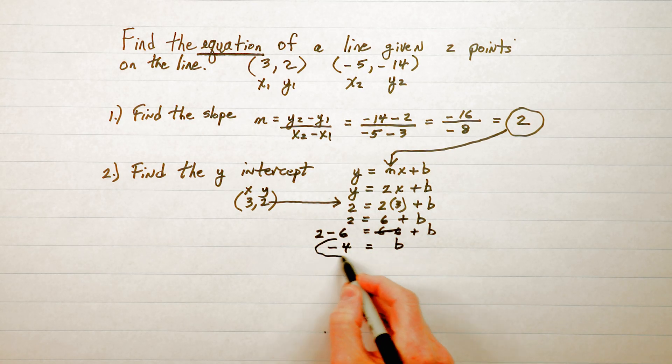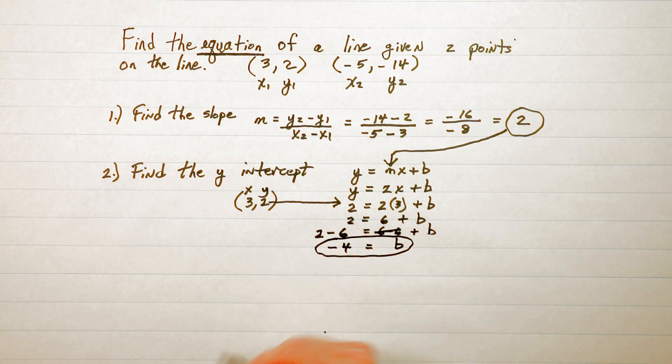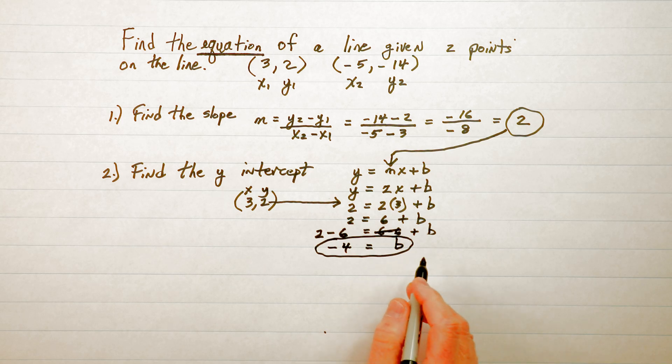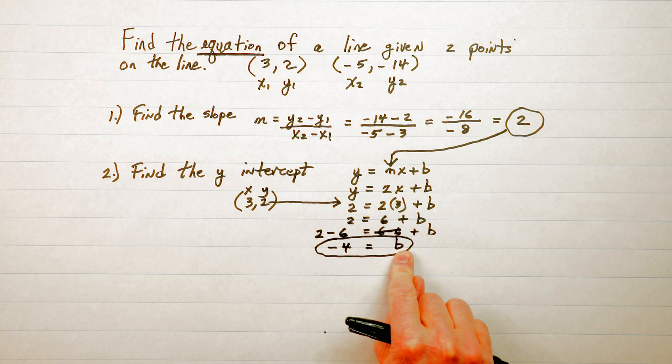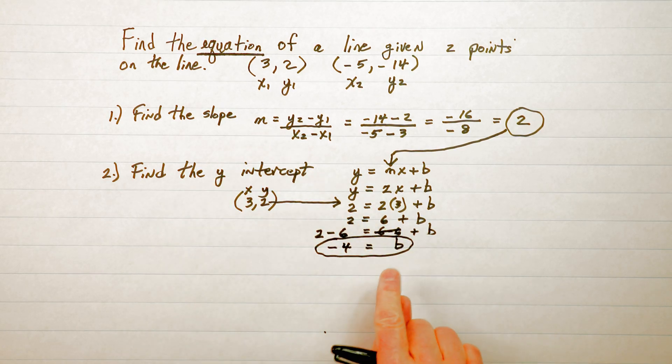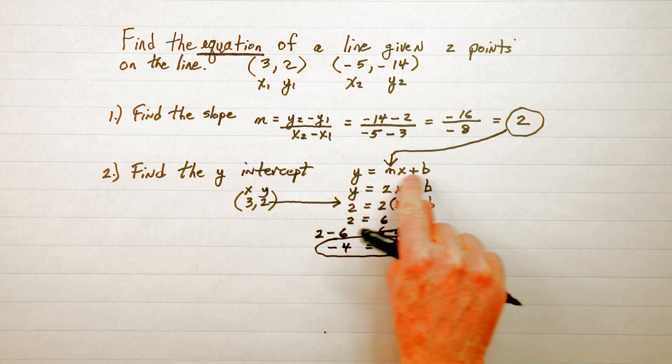So we now have the b value which is the y-intercept. So we call the y-intercept b and the slope we have called m and it all goes back to y equals mx plus b.